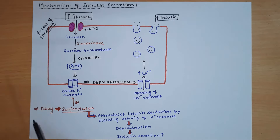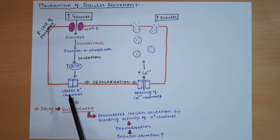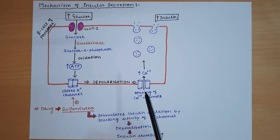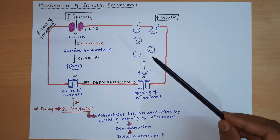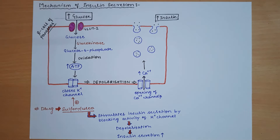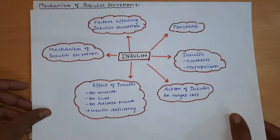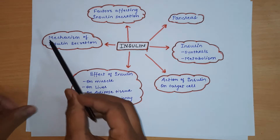An important drug related to this mechanism is sulfonylurea. Sulfonylurea works by blocking potassium channel activity, which causes depolarization, opens more calcium channels, and increases insulin secretion. Therefore, sulfonylurea drugs are used to stimulate insulin secretion.